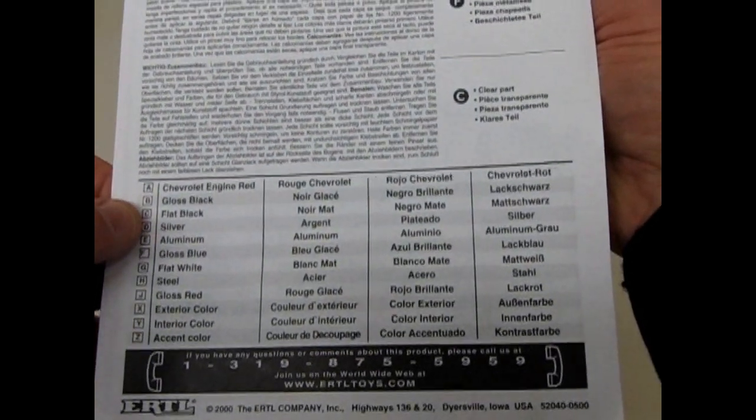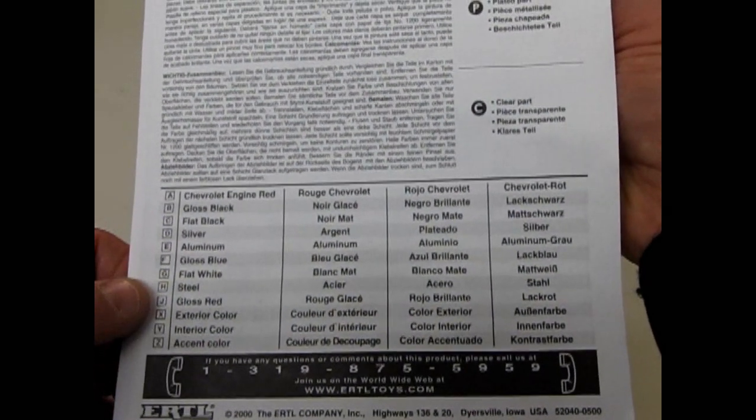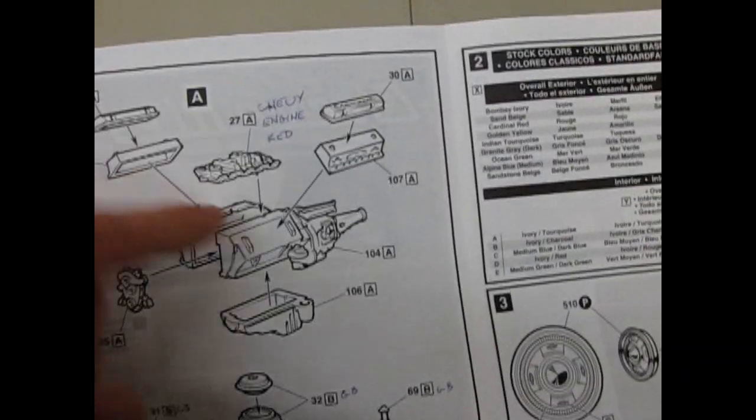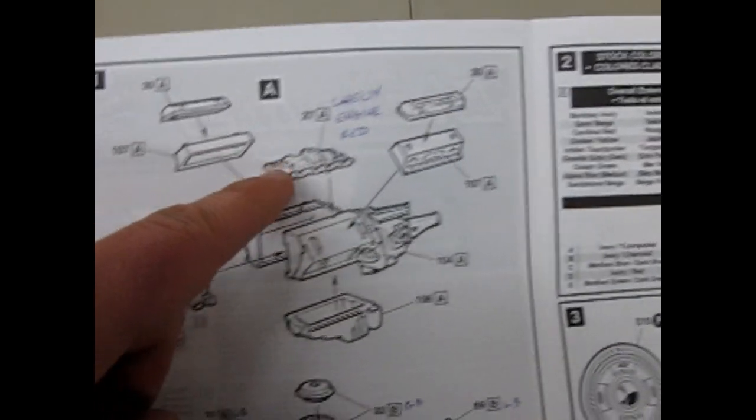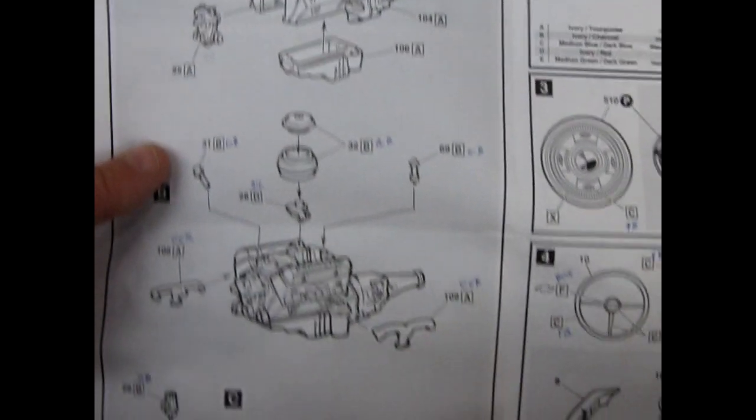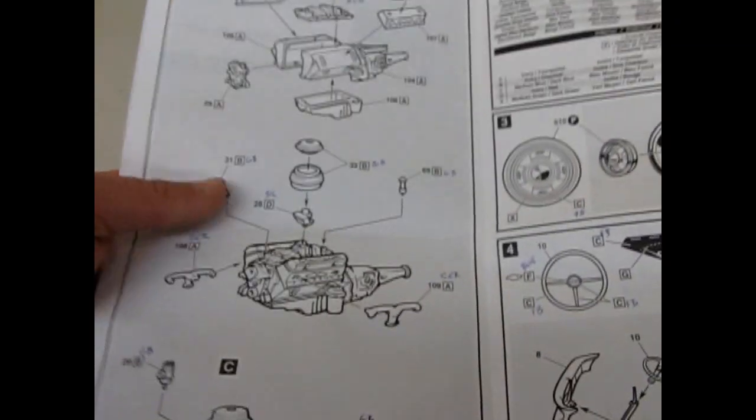They give you a list of all the colors that the car would come in: Chevrolet Engine Red, Gloss Black, and they're all lettered. Those refer to things like this. The Part A on your engine block is going to become Chevy Engine Red, etc. Gloss Black, and so on.